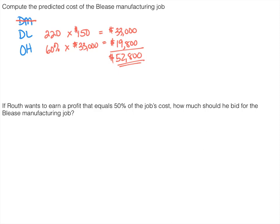The last part: if Ruth wants to earn a profit that equals 50% of the job's cost, how much should he bid for the Bleaks Manufacturing job? This becomes very important in the real world when we want to bid on jobs. We actually want it to be 150% of the cost — we have to meet cost first and then add an additional 50%. So if costs are $52,800, we multiply that times 1.5, which is 100% of cost plus an additional 50%, giving us $79,200 as our bid.